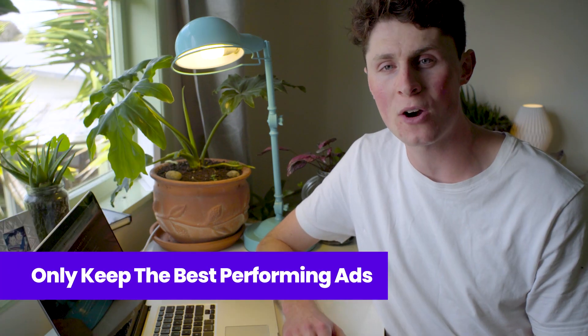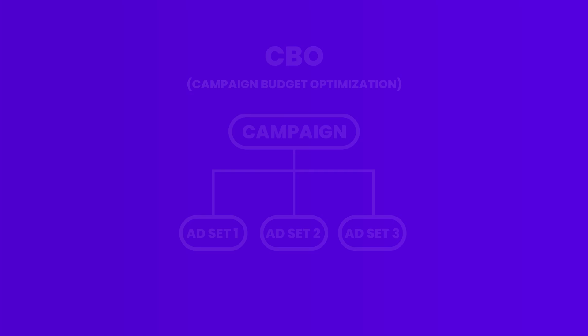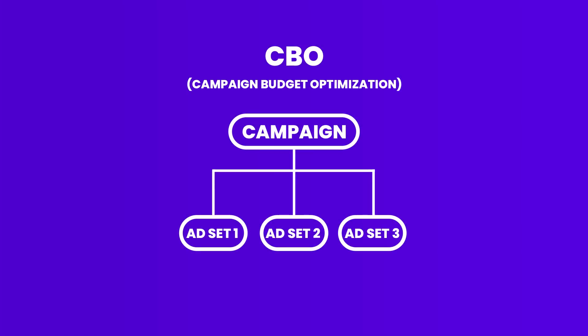Swap out your interests and placements. Most of these will fail, so don't spend too much money here. After you see which ones perform best, cut the others and keep those performers. The CBO algorithm will put more money into the best-performing ads, but check in regularly and pause ads that aren't performing well. You want to corral the algorithm into saving you money and earning you money. And that is the end of this tutorial.